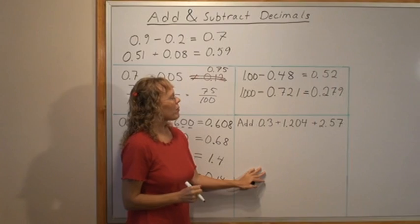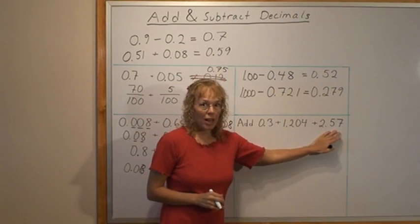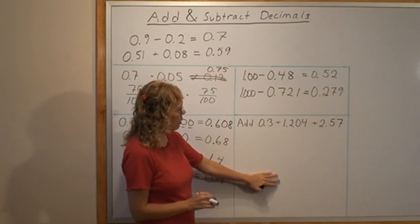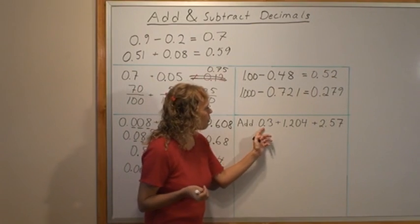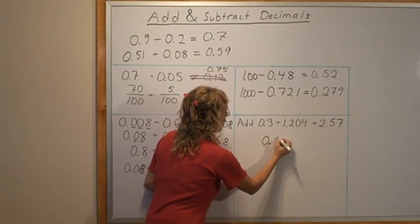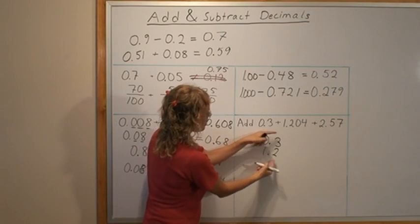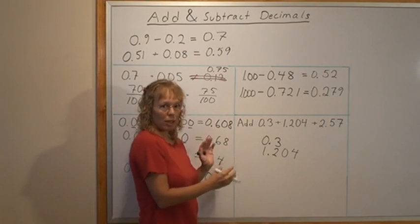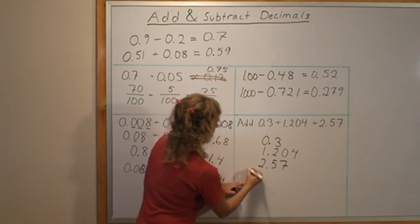Lastly I want to show you a problem where we use column addition. These numbers, maybe you don't want to add them in your head anymore. We will use column addition and write them under each other. And you've been taught the rule that the decimal points have to line up. And when the decimal points are made to line up, then automatically our ones and tenths and hundredths and thousandths are placed where they line up. And that's exactly what needs to be done.